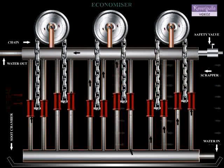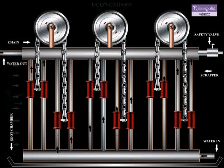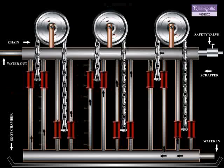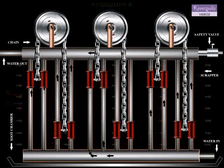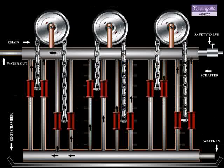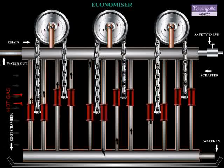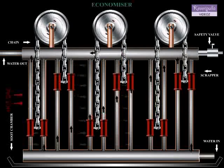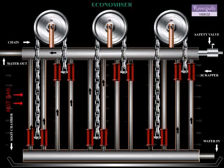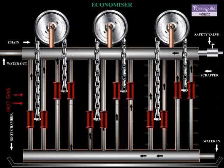The hot gases pass over the external surfaces of the water tubes. The heat from the hot gases is transferred to the feed water through the tube surface. A safety valve is fitted onto the top header for the safety of pipes against any high pressure of water that may develop.